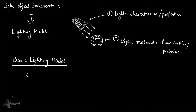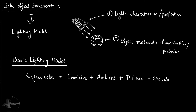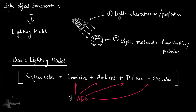In the basic lighting model, the object surface color is the sum of four different properties: emissive, ambient, diffuse, and specular. To remember this, you can use the word EADS — E for emissive, A for ambient, D for diffuse, and S for specular. In later chapters we will understand every single property, how each of these four properties is calculated, and what equations are used.